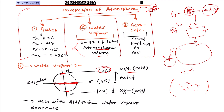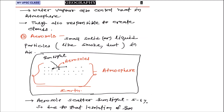At equatorial regions, maximum heat is received, so evaporation is more and water vapor is at about four percent. At the poles there is less water and less evaporation, so water vapor is very low. So the equator has maximum water vapor, making it a moist region. As you go higher in altitude, water vapor content also decreases. This is the basic idea of water vapor distribution in the atmosphere.